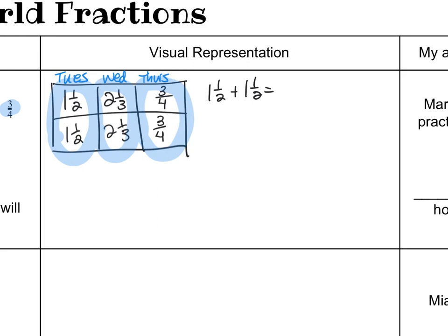First let's add one and a half plus one and a half. That equals two and two halves. What's the same thing as two halves? One, right? So that's two plus one, that's three.